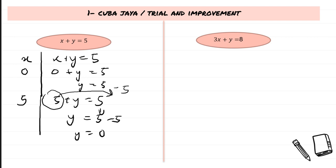We write the possible pairs of solutions in coordinate form. When x = 0 and y = 5, we write (0, 5). When x = 5 and y = 0, we write (5, 0). You can try as many pairs as possible, but I'm showing only two here.